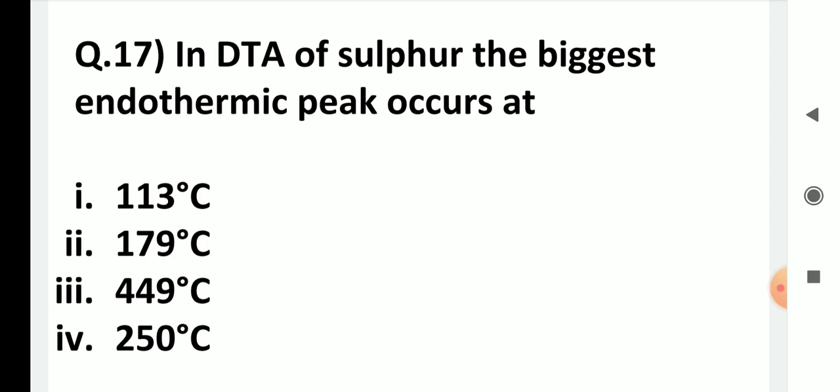In DTA of sulfur, the biggest endothermic peak occurs at: 113, 179, 449, or 250 degrees? The answer is 449°C, because at that temperature boiling of liquid sulfur takes place — boiling is always endothermic and requires a lot of energy, making this the biggest peak.